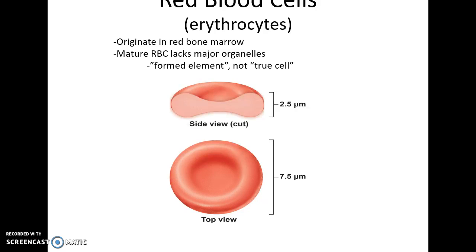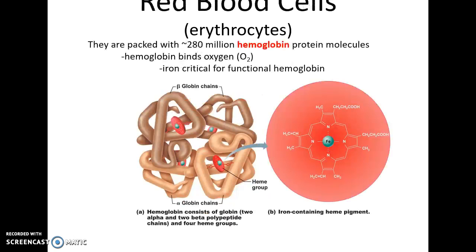Erythrocytes are the red blood cells. When they are mature, they lack most of their organelles — this is why they are a formed element, not a true cell in and of itself. They lack mitochondria, they lack a nucleus, they lack the endoplasmic reticulum and Golgi apparatus. Instead, they are basically big bags of hemoglobin. Hemoglobin is a protein that can bind to oxygen.